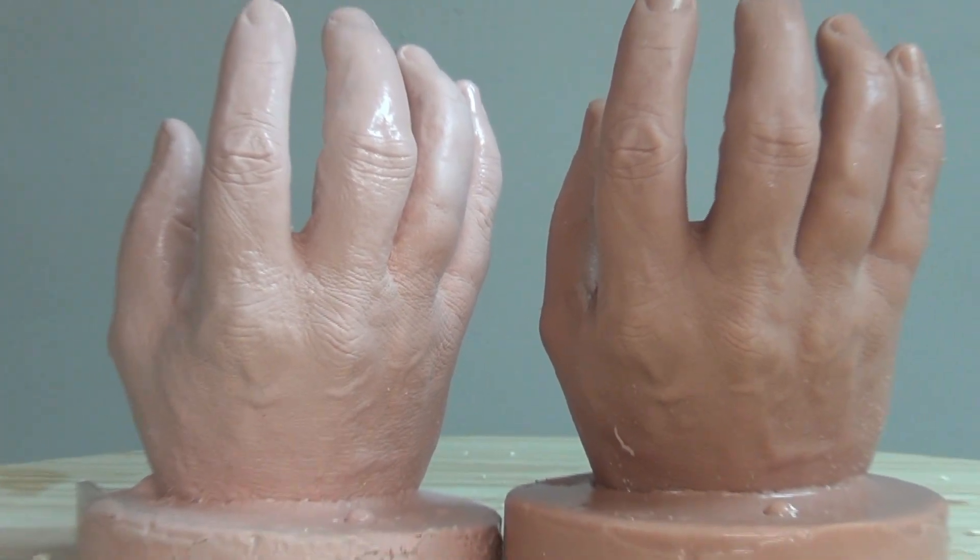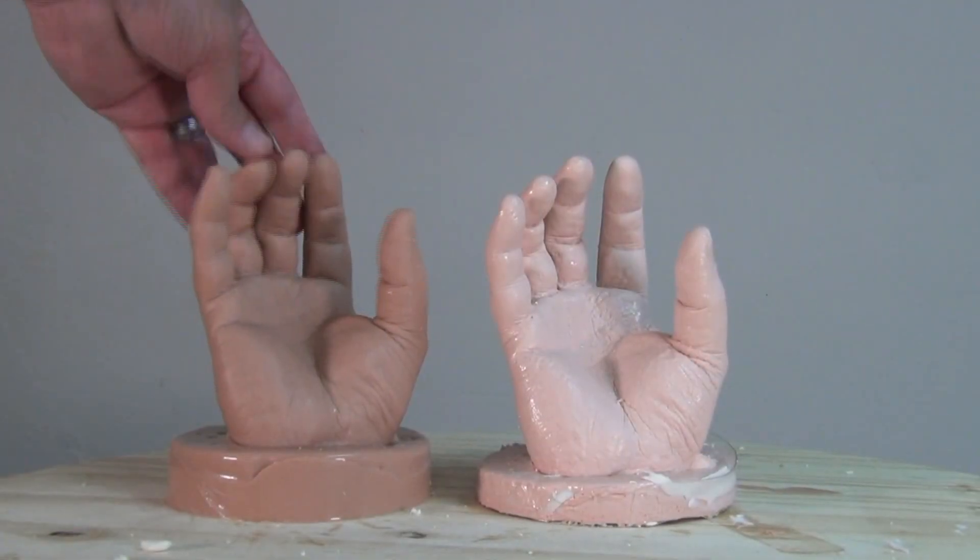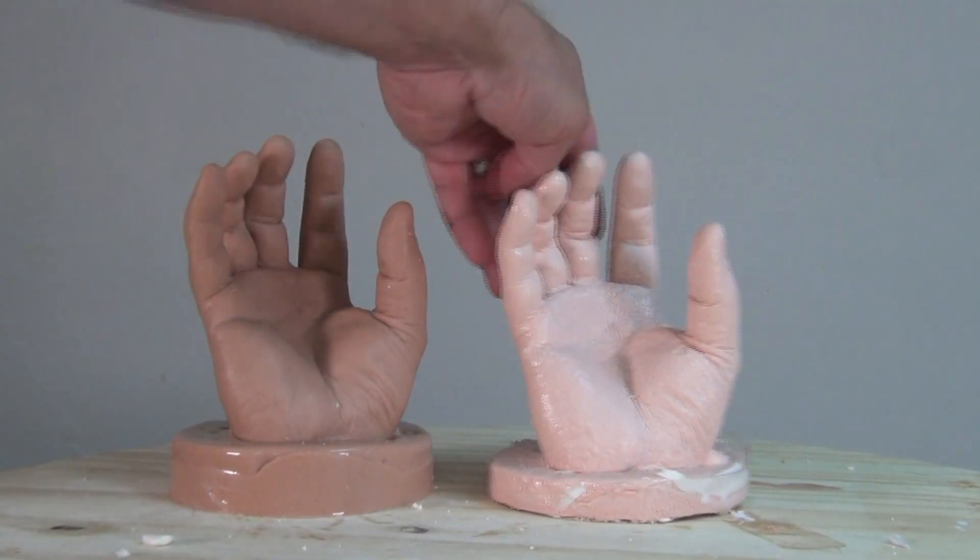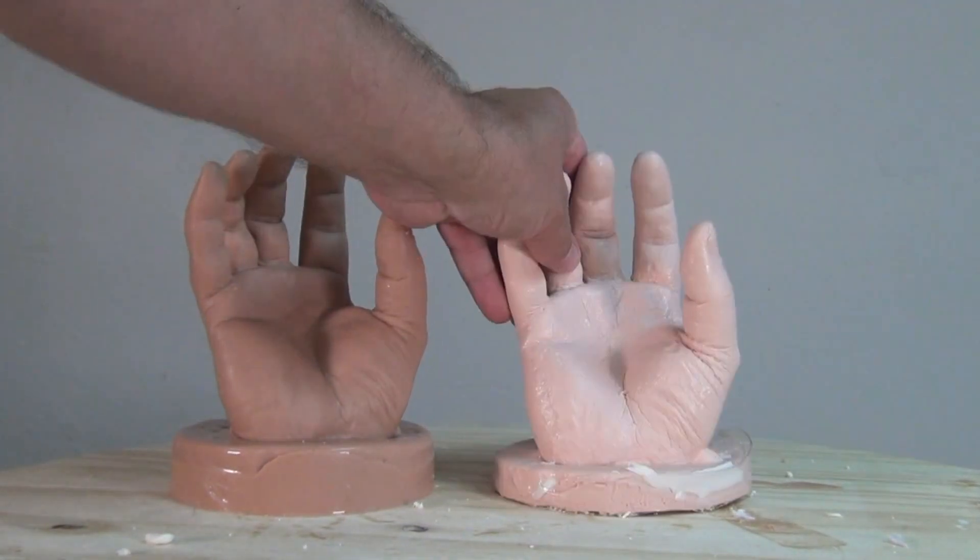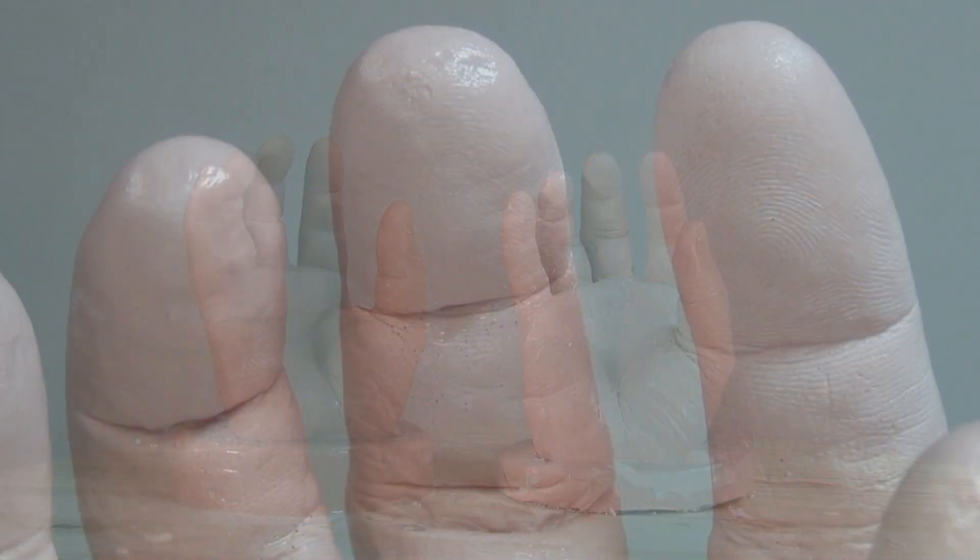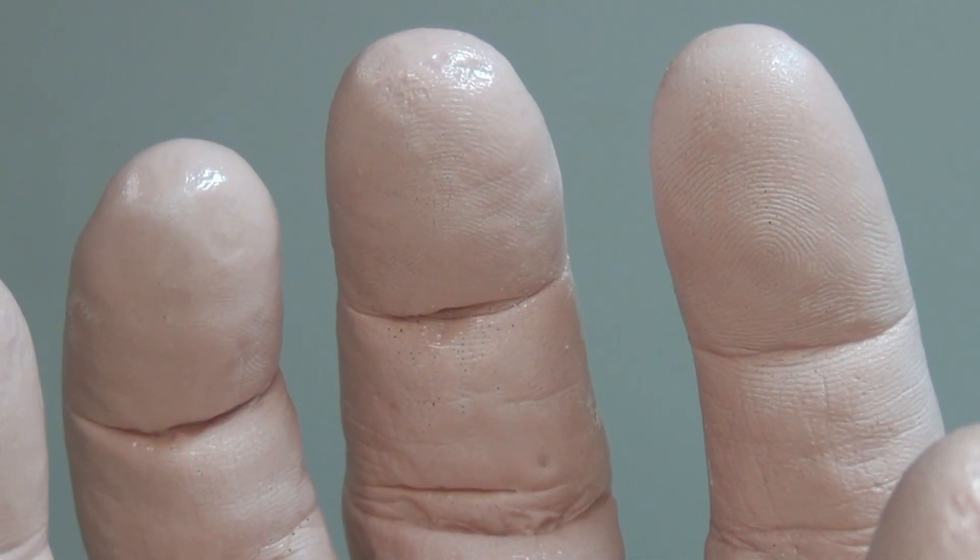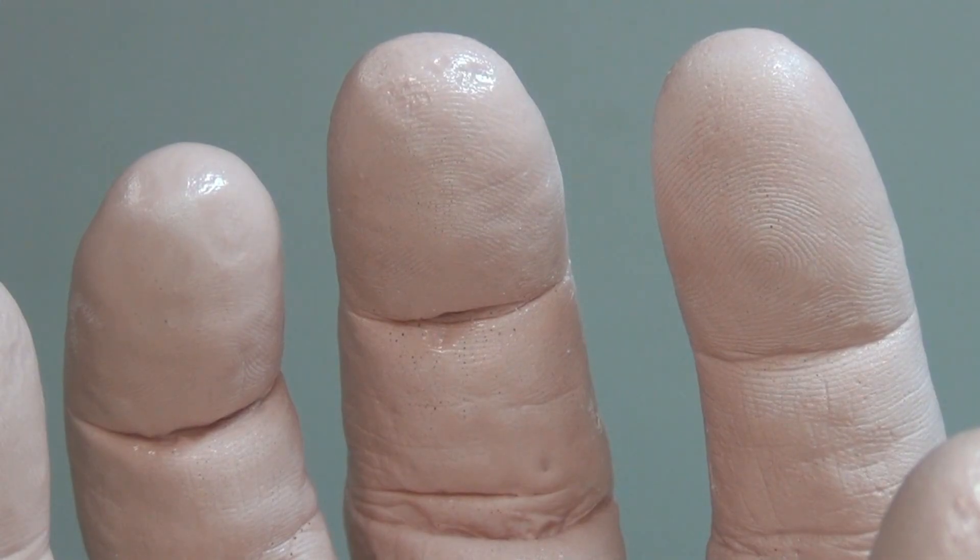In previous tutorials, I've shown the process of casting platinum silicone for flexible realistic positives. But this time around, we're going to be casting a tough impact-resistant resin that will actually get fingerprint detail out of our alginate mold.